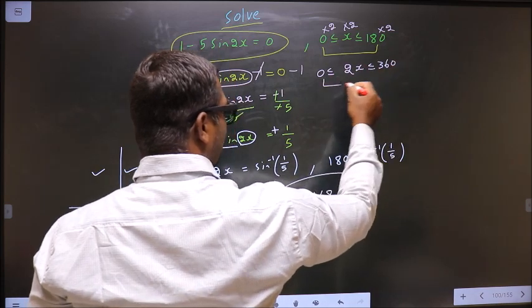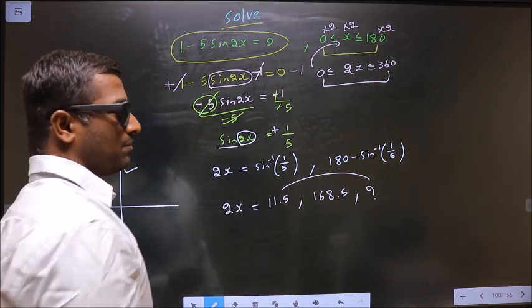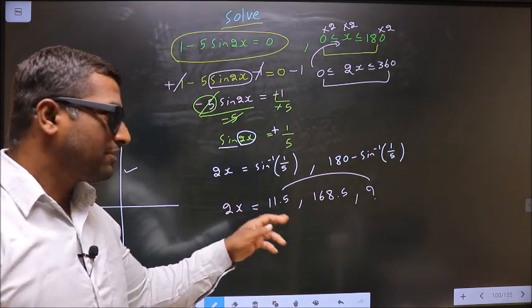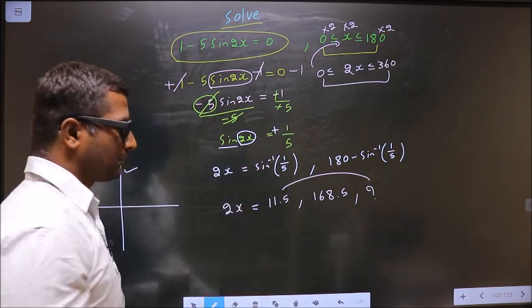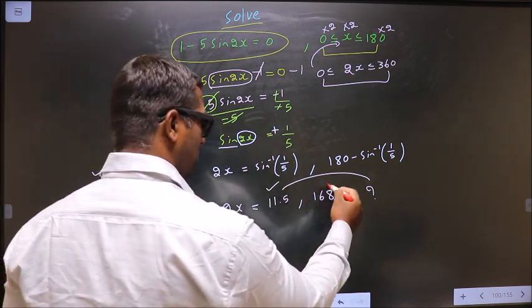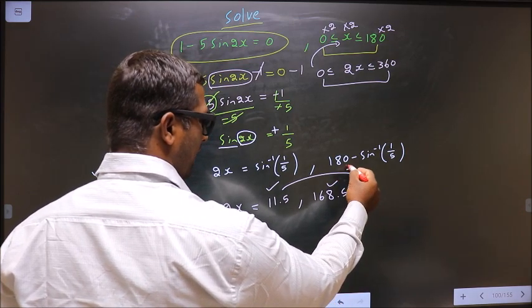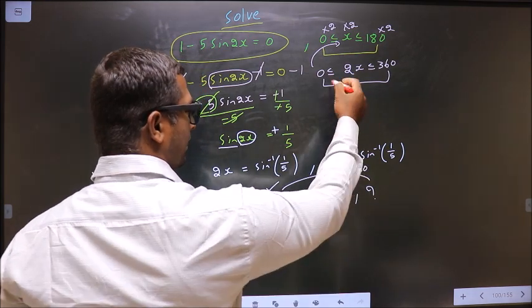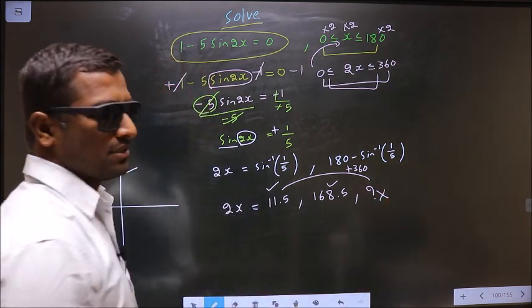Now when 2x lies in this interval, automatically x will lie in this interval. Now here you check whether all values lie in that interval or not. This value lies, this also lies. Now to get another angle, I should add 360 to this. That will not lie in this interval. So I do not need to find any more angles.